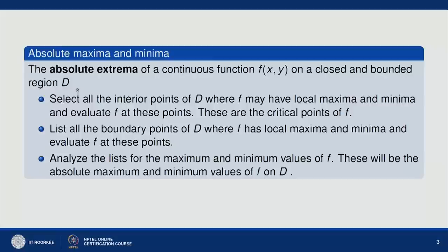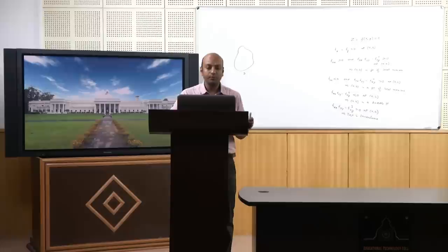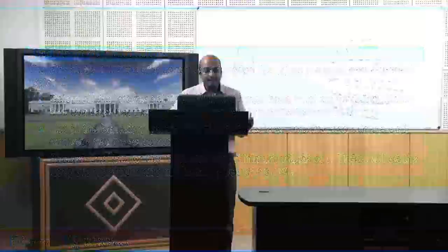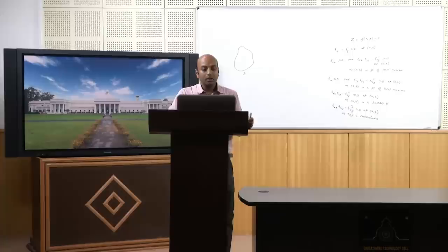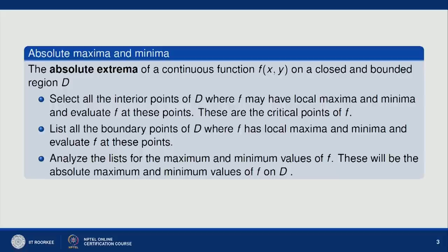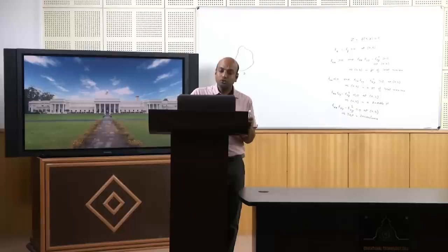To find absolute maximum and minimum on a closed bounded region D: first, select all interior critical points of D where f_x = f_y = 0 and evaluate f at these points. Second, find all boundary points of D where f has local maxima or minima and evaluate f there. Then from the complete list, the largest and smallest values are the absolute maxima and minima of f on D.